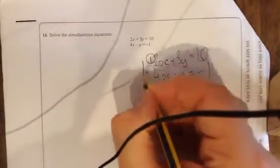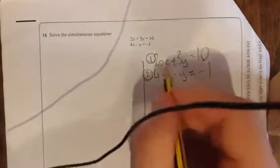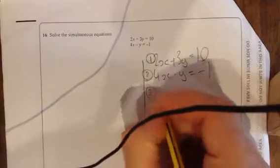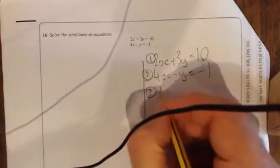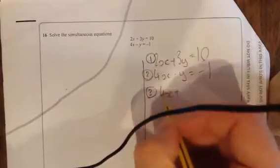If I label these as 1, 2, it will make more sense to double the first one to make the x's the same. So, the first one, which I'm now going to write as 3, I'm actually going to write as 4x, because 2x times 2 is 4x. 3y times 2 is 6y equals 20.